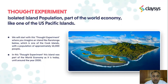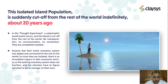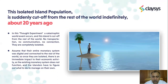Imagine this island with 10,000 people, which is part of the world economy as we know it before the COVID-19 crisis — but 20 years in the past, in the year 2000. This isolated island population is suddenly cut off from the rest of the world indefinitely after a catastrophic world event. There is no transportation, no communication, no connection to the world — they are completely isolated. Their monetary system was digital and connected to the rest of the world, so once isolated, there is an immediate impact to economic activity as the existing monetary system does not function.